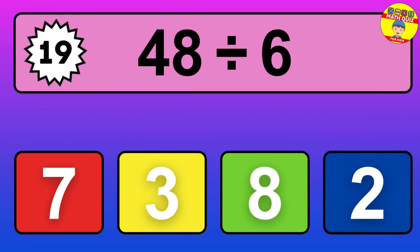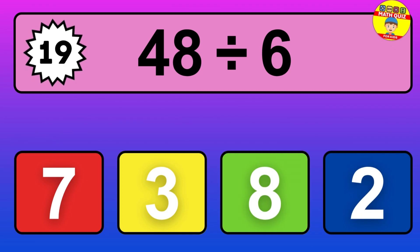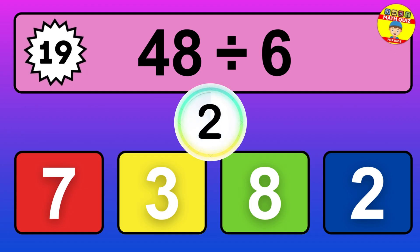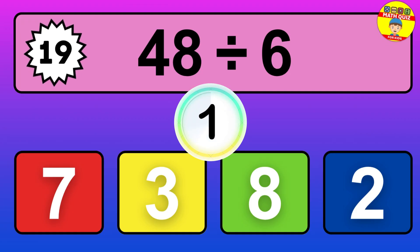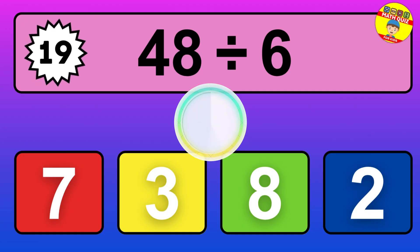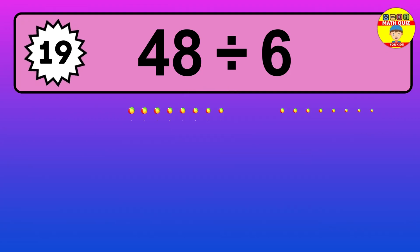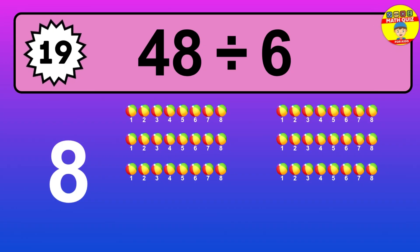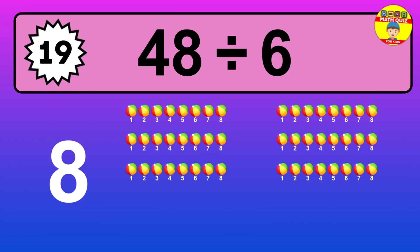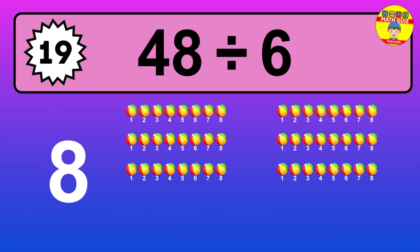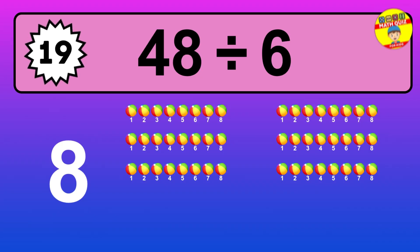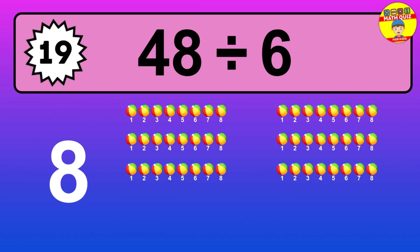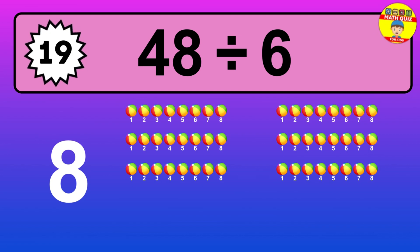48 divided by 6 — it's time to think. Let's go to the solution. Divide the number 48 by 6. Each group contains 6 units, so dividing 48 by 6 results in 8 equal groups. Thus, the result is 48 divided by 6 equals 8.